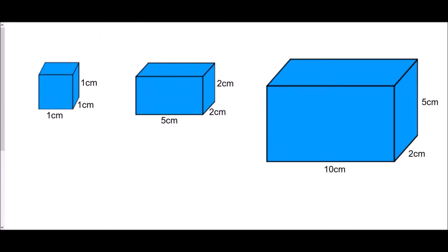First, let's look at some terminology about 3D shapes. In the first shape, all of the dimensions are one centimeter — here we have the width, the height, and the length, each one centimeter long. Because all of the sides are the same length, we call this one a cube.